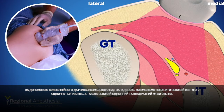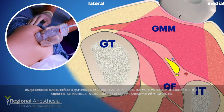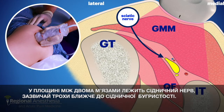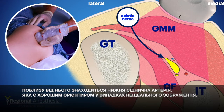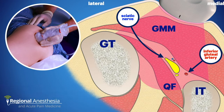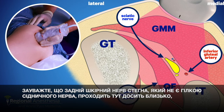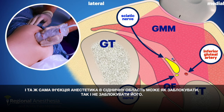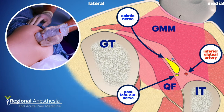With a curvilinear probe placed over the trough, we'll be able to see the greater trochanter, the ischial tuberosity, and the gluteus maximus and quadratus femoris muscles. In the plane between the two muscles lies the sciatic nerve, usually somewhat closer to the tuberosity side. Close to this is the inferior gluteal artery, which is a good landmark in cases where the imaging is less than ideal. Note that the posterior cutaneous nerve of the thigh, which is not a branch of the sciatic, runs quite close here and may or may not be blocked with the same sciatic injection.